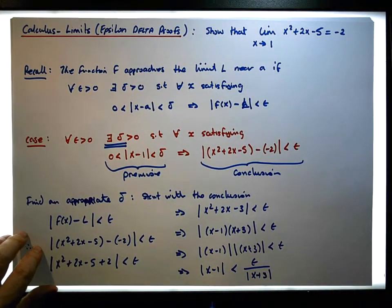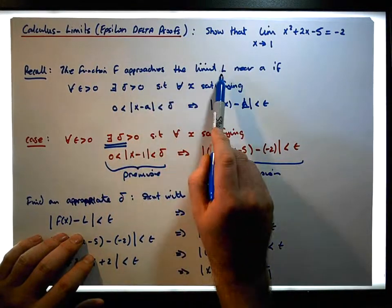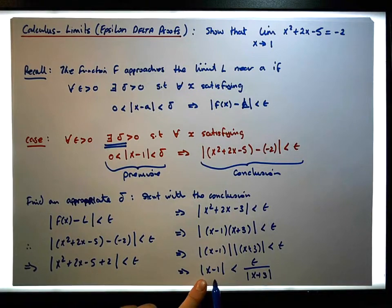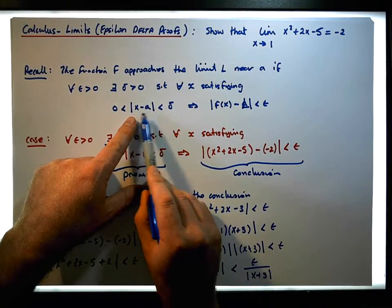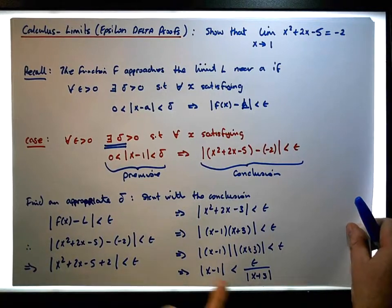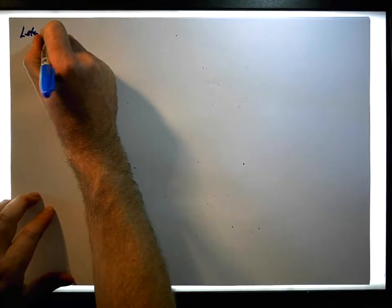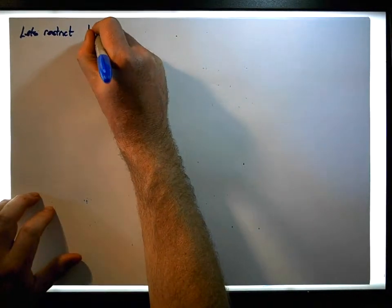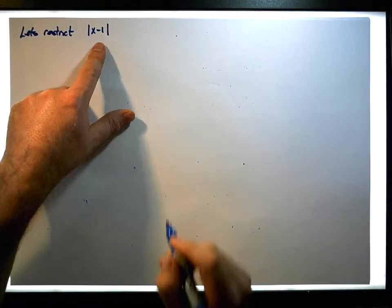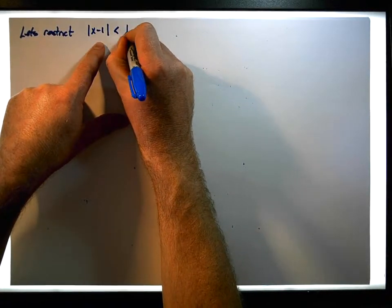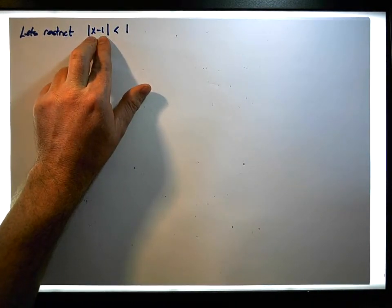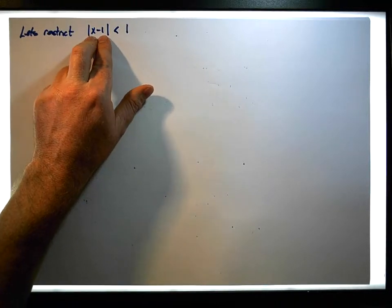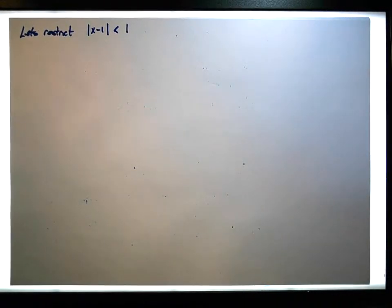We know the function approaches the limit near a. So let's introduce a restriction: we'll restrict x minus 1 to be less than 1. That means the x values are within one unit of a, the point where we're evaluating the limit.